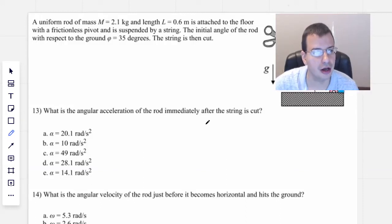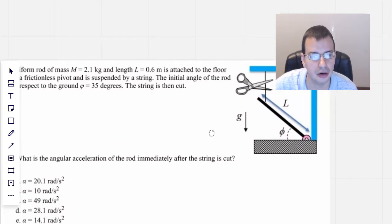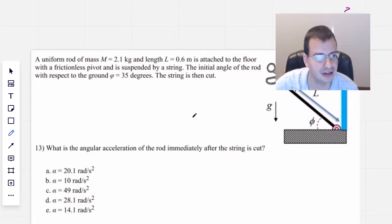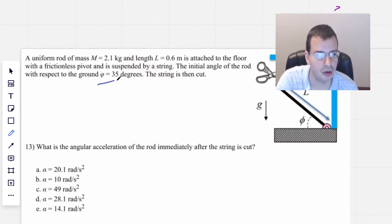A uniform rod of mass 2.1 kilograms and length 0.6 meters is attached to the floor with a frictionless pivot. Is that a hinge? I'm going to say pivot. It's going to be suspended by a string. The initial angle of the rod with respect to the ground is phi, which is also 35 degrees. The string is then cut.